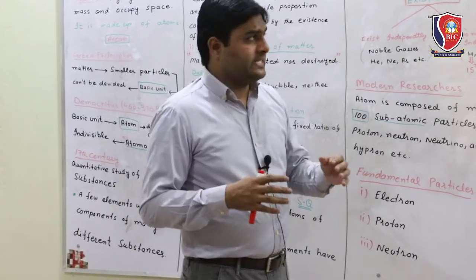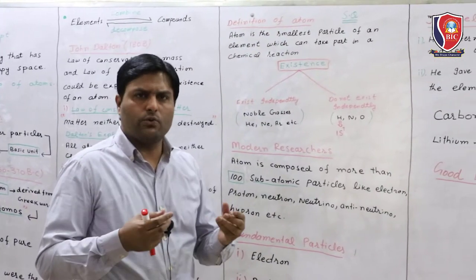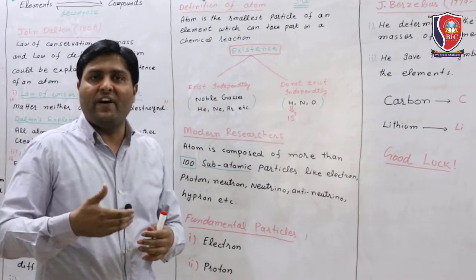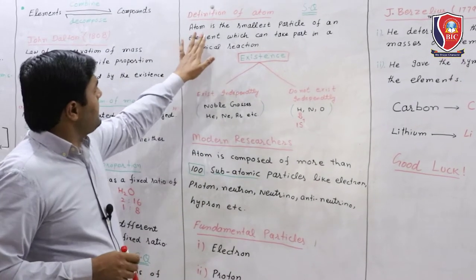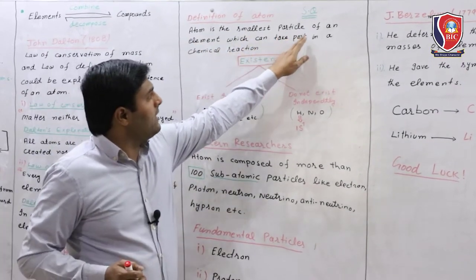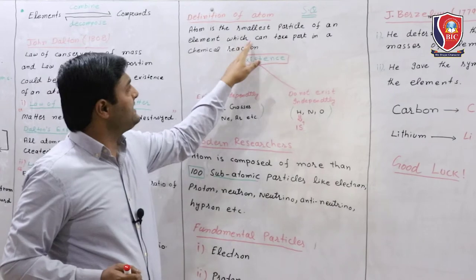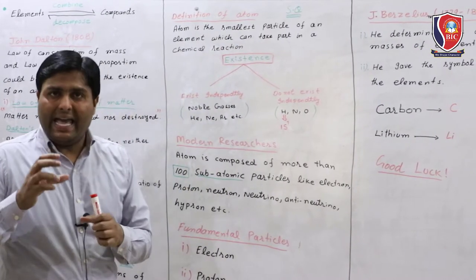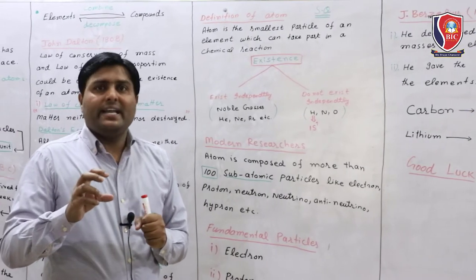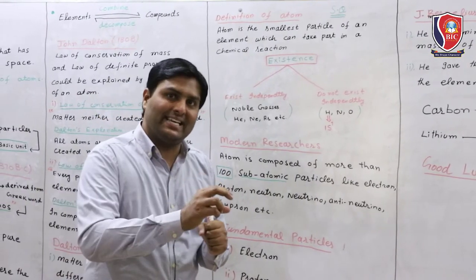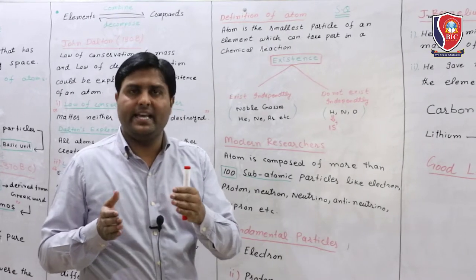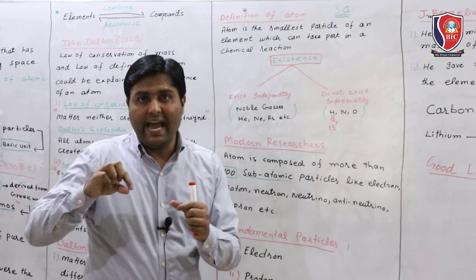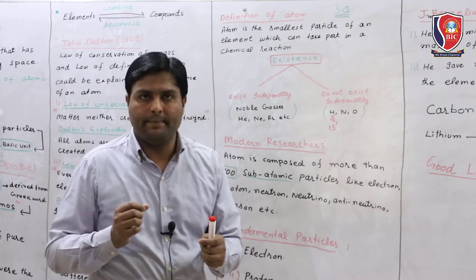Now we have the definition of atom, which is a short question. Atom is the smallest particle of an element which can take part in a chemical reaction. When reactants and products are created in a chemical reaction, it means that the atoms of the elements can take part in that chemical reaction.